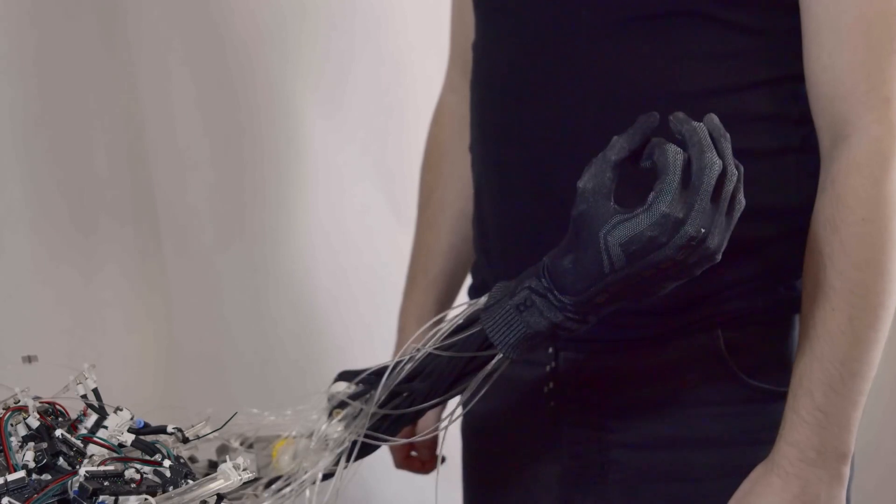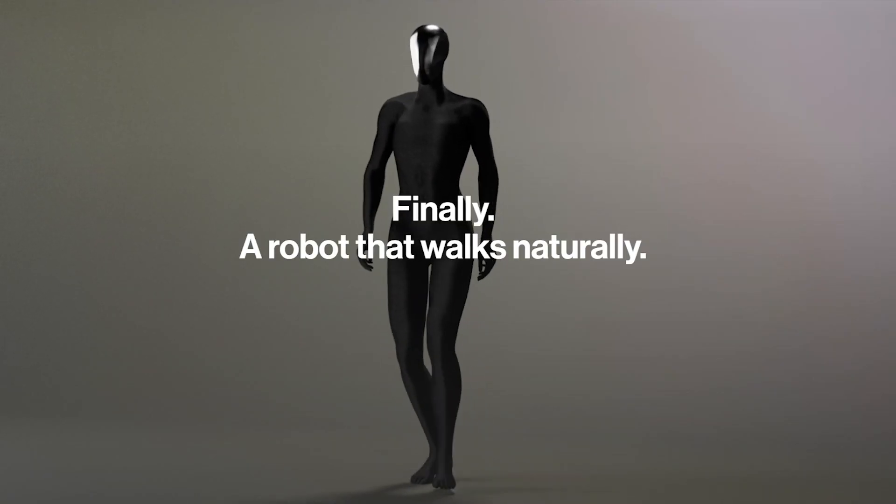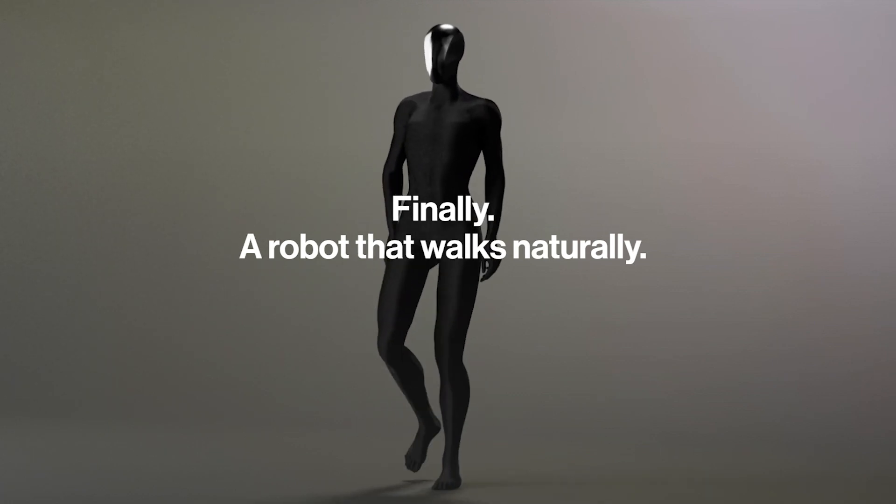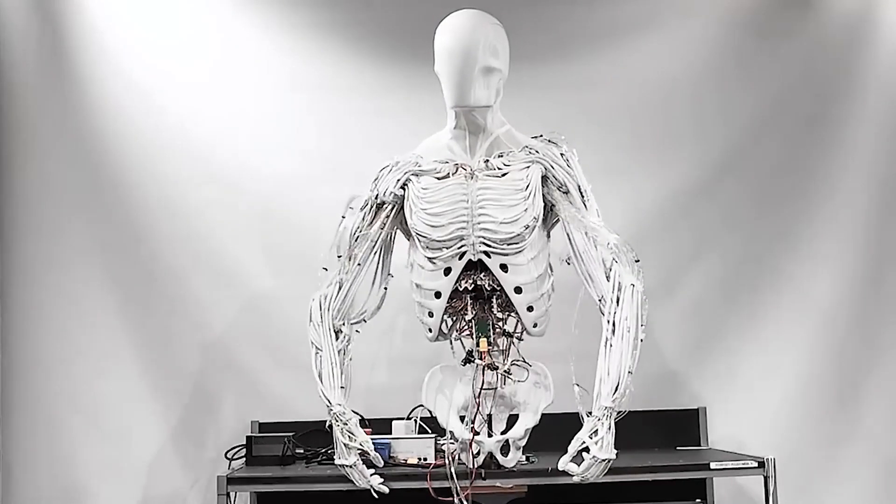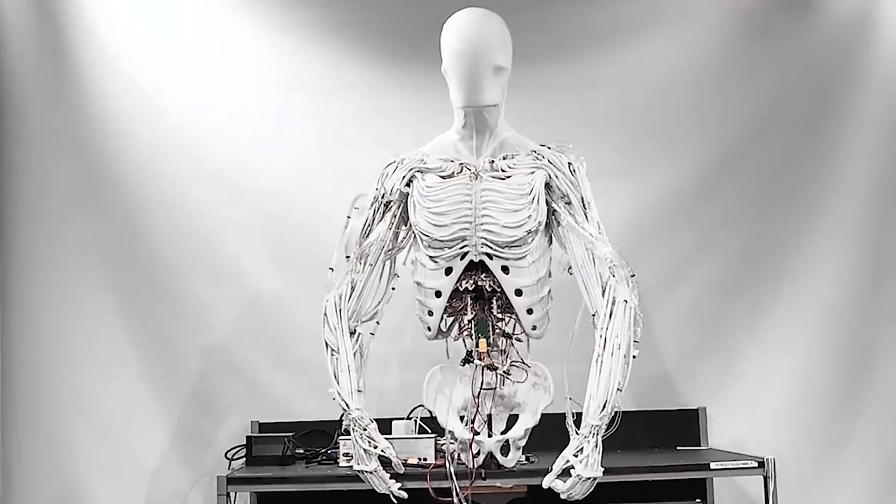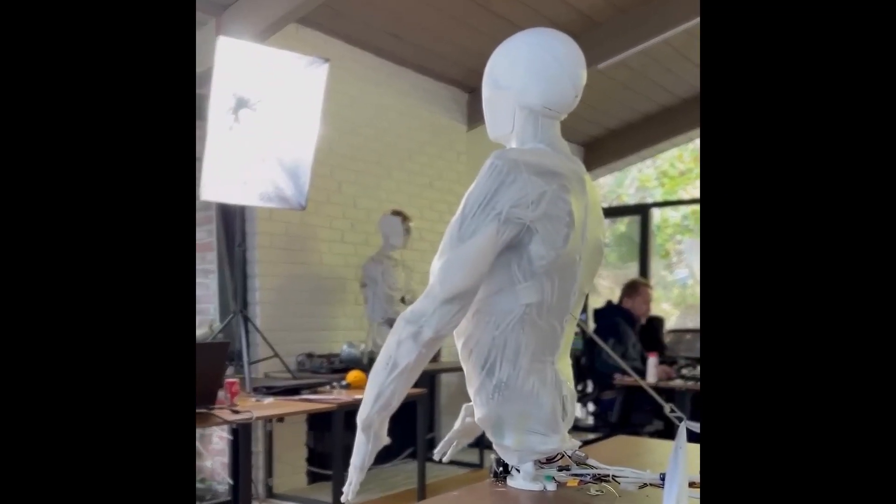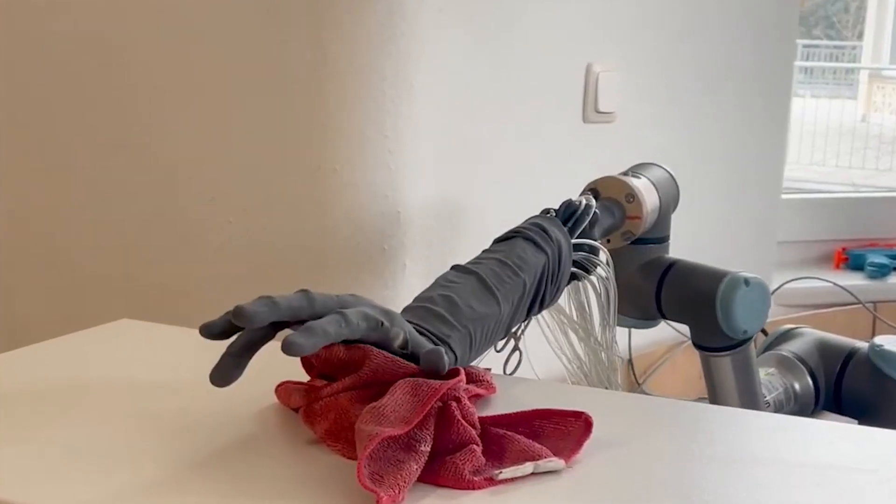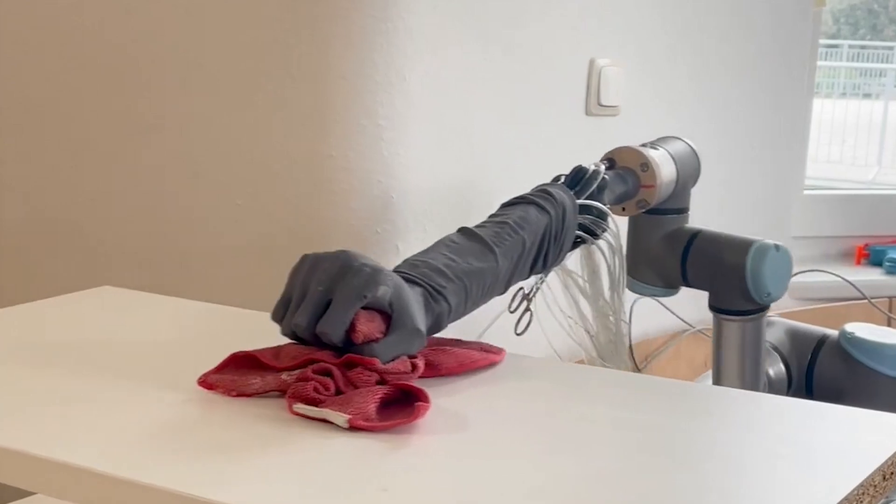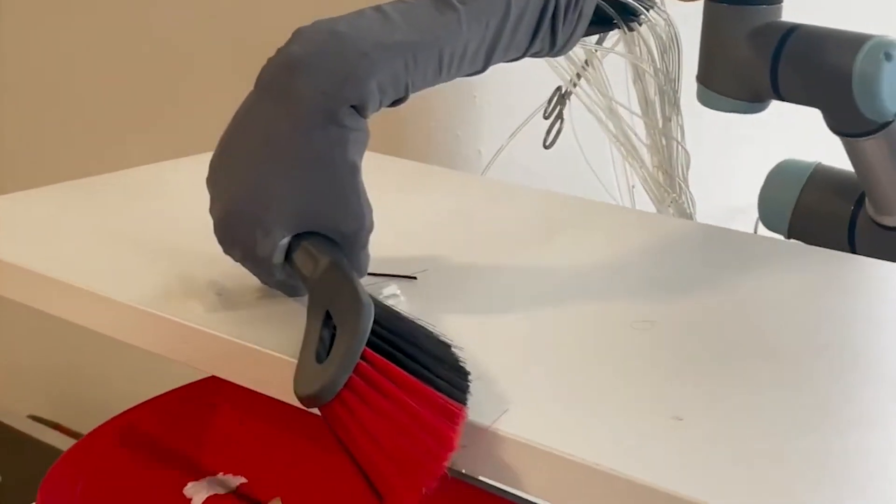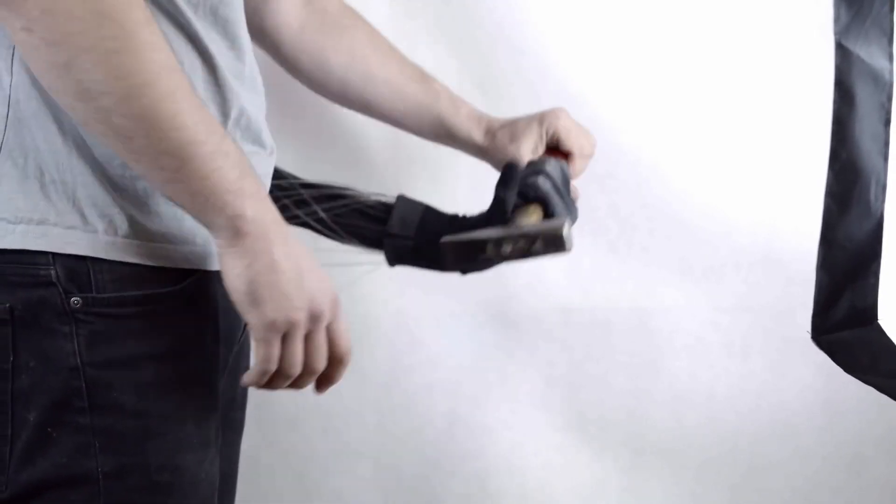Some critics argue that creating machines with such human-like characteristics could blur the line between what is considered human and what is not, raising questions about the future of robotics and artificial intelligence. Clone Robotics has big plans for the Protoclone beyond just serving as a curiosity. The company envisions the robot performing practical tasks like washing dishes, folding laundry, and preparing meals. These types of household chores are often repetitive and time-consuming, making them ideal tasks for a robot designed to replicate human dexterity.